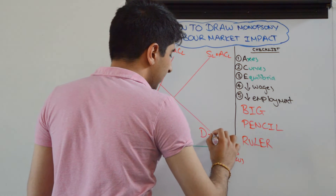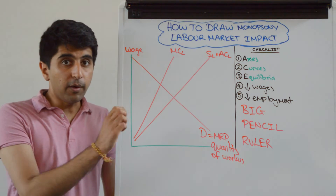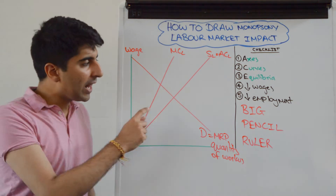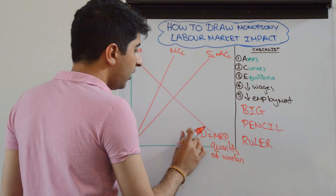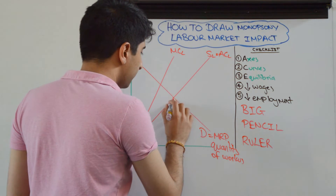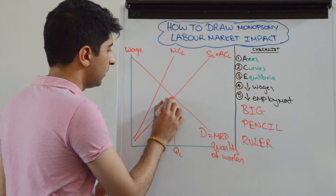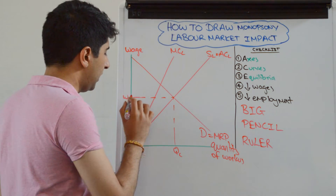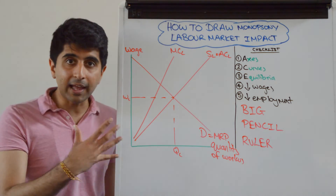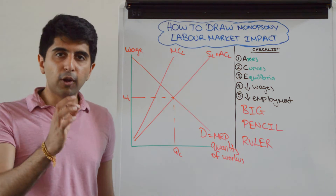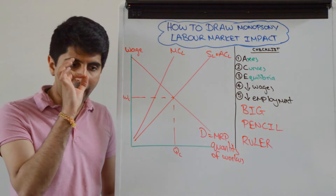The demand curve is just the normal MRP curve, so demand is equal to MRP as we're used to. Next, put on the competitive outcomes: the competitive quantity, which is where demand equals supply — call that QC — and the wage in a competitive market would be WC, where demand equals supply. Stick that on.